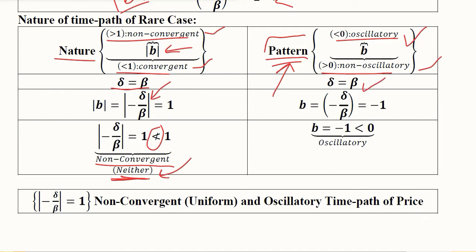The value of small b, if both of them are equal, will be equal to 1, and the negative sign of the formula will make it minus 1. So it is less than 0, which means we have an oscillatory time path because the value of b is a negative value.